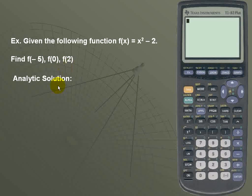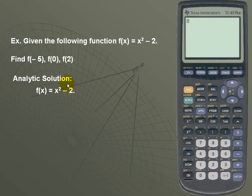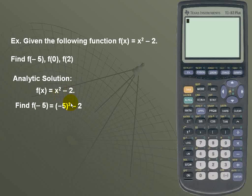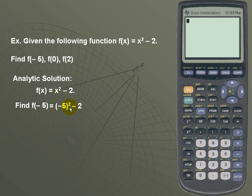Here's the analytic solution. We will take our function f of x, which equals x squared minus 2, and to find f of negative 5, we'll simply replace x with negative 5. So for our function, we have x squared minus 2, replacing negative 5 with x, we have negative 5 quantity squared minus 2 for a result of 23.